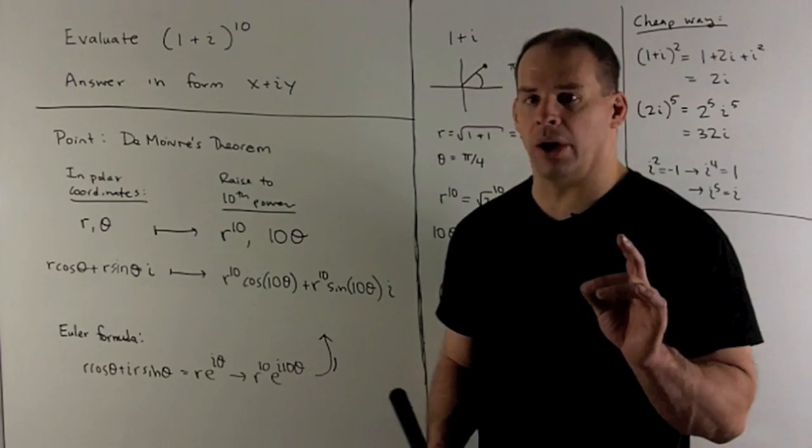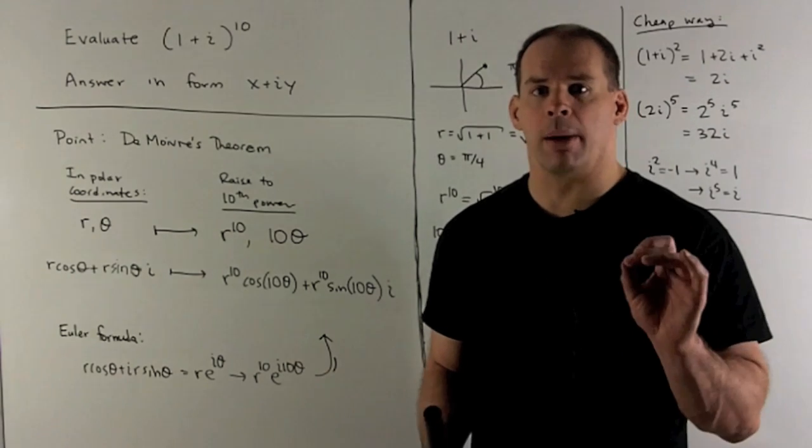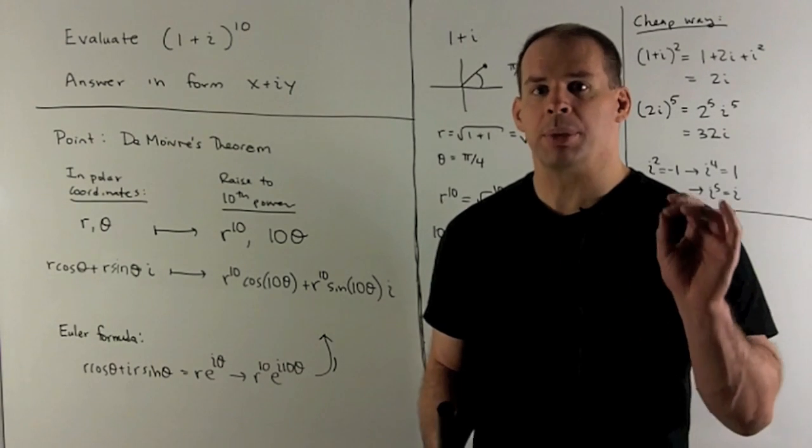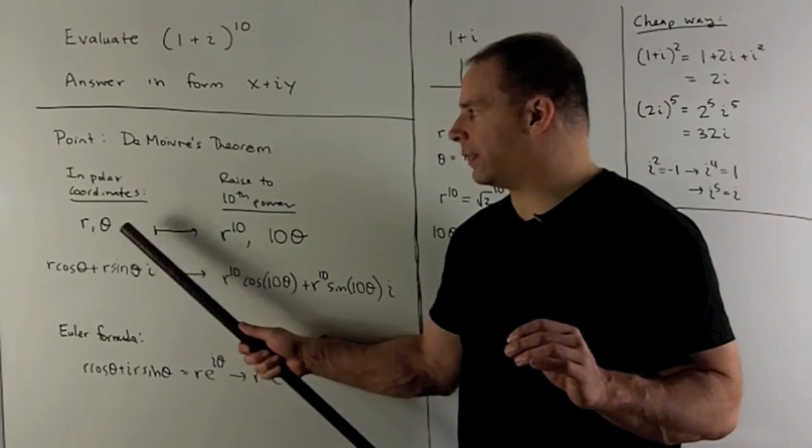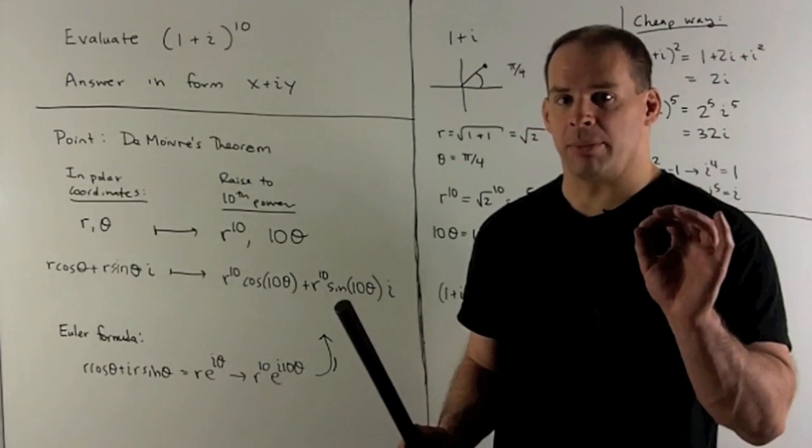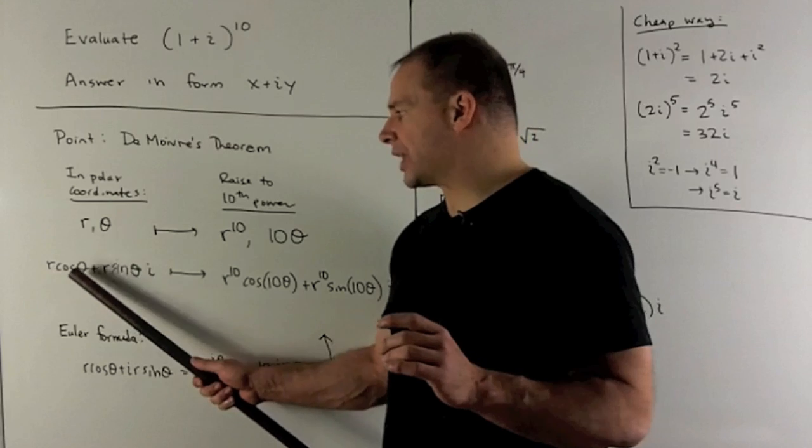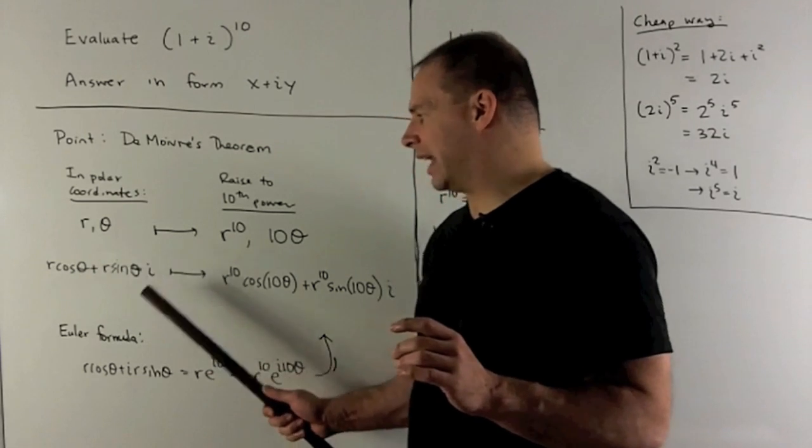In this case, what do we do? We'll take our complex number, put it as a point in the plane, and then find its polar coordinates. So we'll have r and theta, and then the complex number that goes with that, r cosine theta plus r sine theta i.